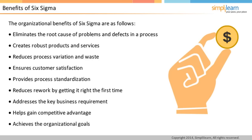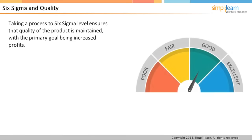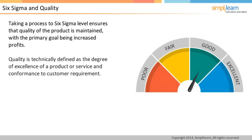Taking a process to Six Sigma level ensures that the quality of the product is maintained. The primary goal of improved quality is increased profits for the organization. In simple terms, quality is defined as the degree of excellence of a product or service provided to the customer — it is conformance to customer requirement. If the customer is satisfied with the product or service, then it is of the required quality.